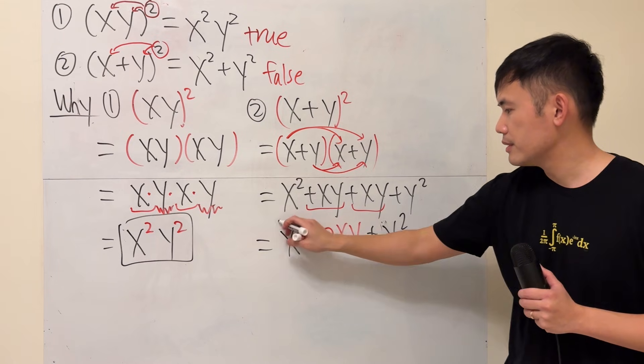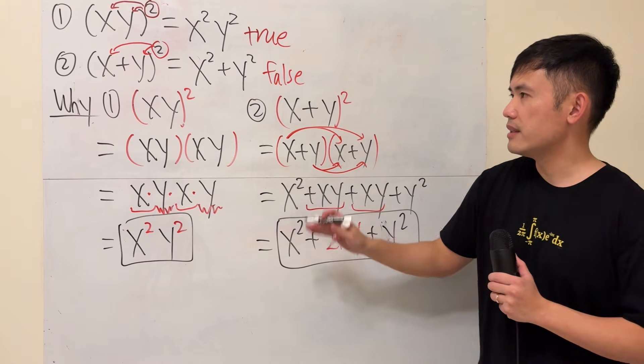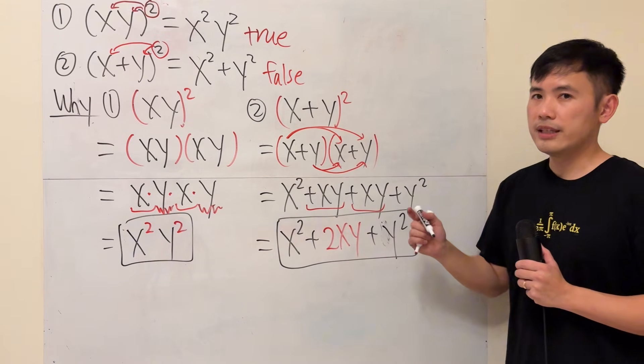So together, this is x squared plus 2xy and then plus y squared. And we're done. That's the answer. And that's the identity for this right here. Now, let's take a look at the geometry.